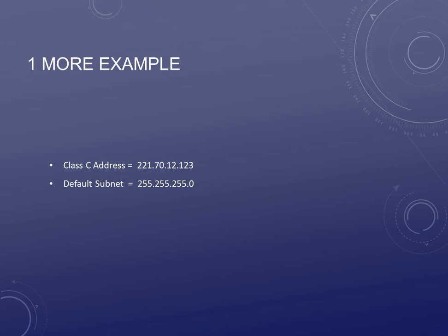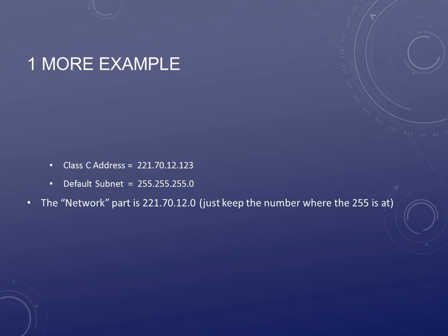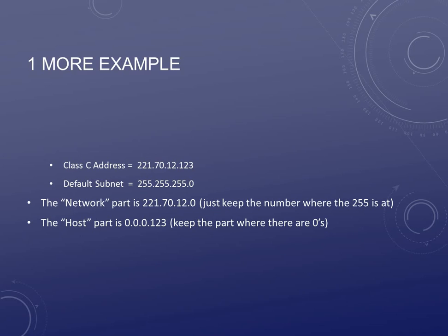Let me give you one more example — a Class C address: 221.70.12.123. The default subnet for a Class C address is 255.255.255.0. So the network part is the first three octets: 221.70.12. Only the last octet — the host part — is the 123; that's where the zero is. That's the only part that changes per machine. Every machine in your Class C network must start with 221.70.12. The 123 will be different for every machine, but remember that number can only go up to 255. So if I have a network of 500 machines, I can't use a Class C address — I don't have enough IP addresses.